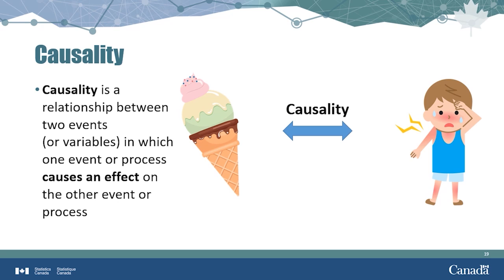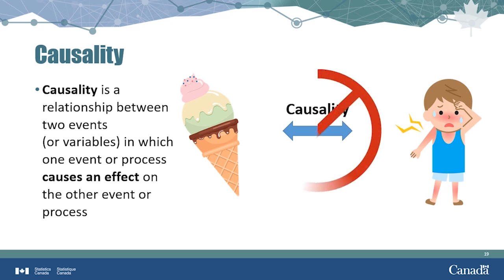Causality is a relationship between two events or variables in which one event or process has a cause and effect on the other. For example, research tells us that there is a positive correlation between ice cream sales and sunburns, meaning as ice cream sales increase, so do instances of sunburns. But this doesn't mean that buying an ice cream cone causes a sunburn, does it? Of course not. Causality adds real-world context and meaning to the correlation.